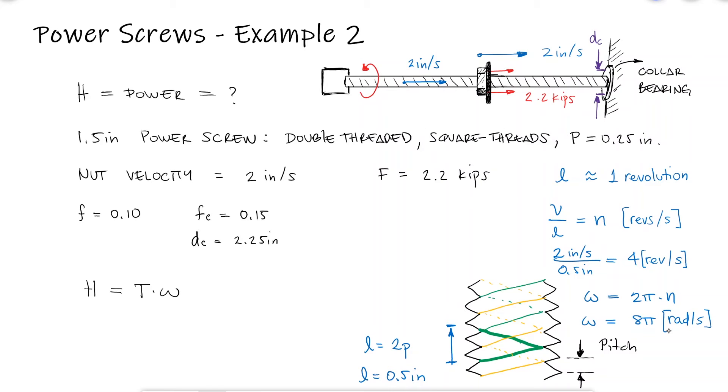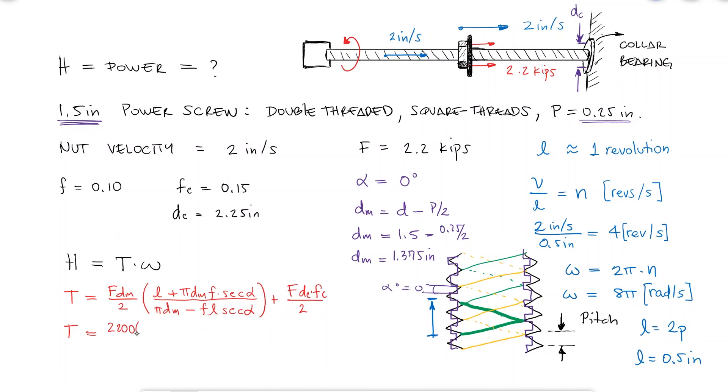For an angle alpha equal to 0 for a squared threads profile, and a mean diameter equal to the nominal diameter minus p over 2, just like we explained during example 1, link below, we find that the torque is equal to 701 pound inches.